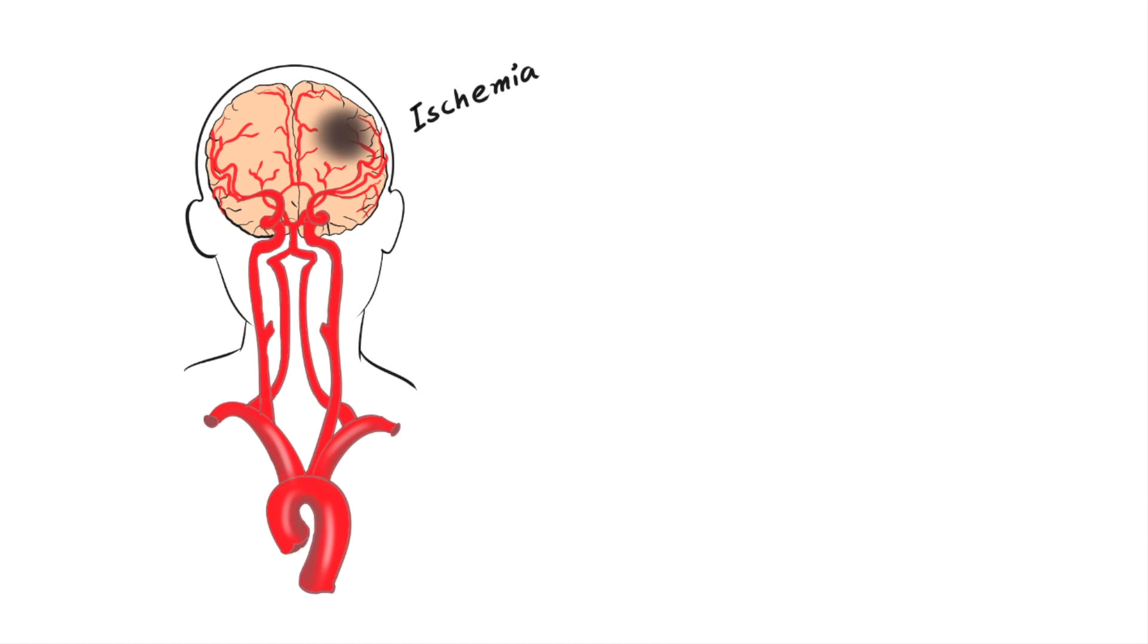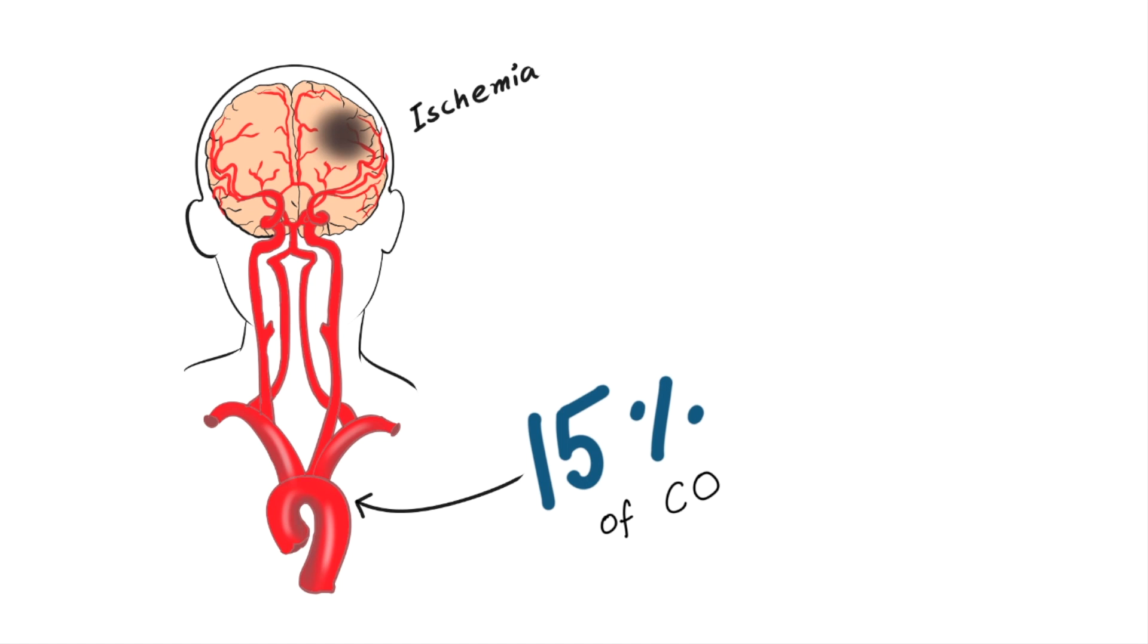Before going to the detailed description, we should know how much percentage of cardiac output is going to our brain. Well, almost 15% of cardiac output is devoted to our central nervous system.